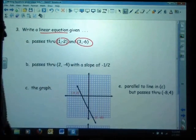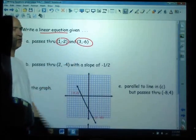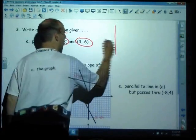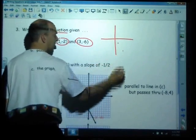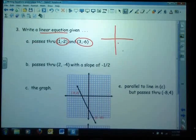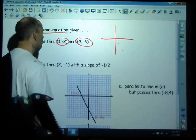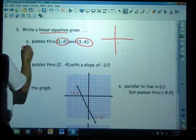You do not need to graph this. What you need to do is realize, are either one of these a y-intercept? And the answer to that, 1 negative 2, 3 negative 6, is they're not. We don't know the y-intercept just looking at this. So in this situation, you'd want to use point-slope form.